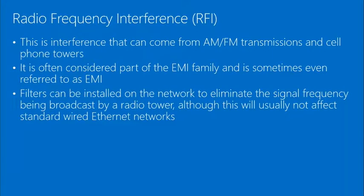Radio frequency interference — AM, FM transmissions, cell phone towers — is typically considered part of the EMI family. Filters can be installed on the network to help eliminate signal frequency being broadcast. DSL users may have seen the small filters placed on phone lines, because in DSL's case the interference comes from the same wire carrying two signals simultaneously.